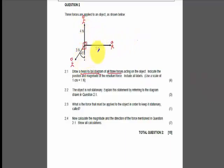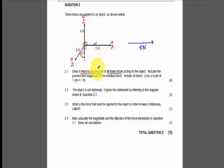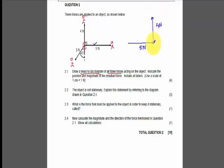It doesn't matter which vector we start with. I'm going to start with the five newton vector and draw it here — five newtons horizontally. Then, drawing head-to-tail, the next force is four newtons going straight up. I apologize that mine isn't perfectly straight up, but I don't have a ruler.